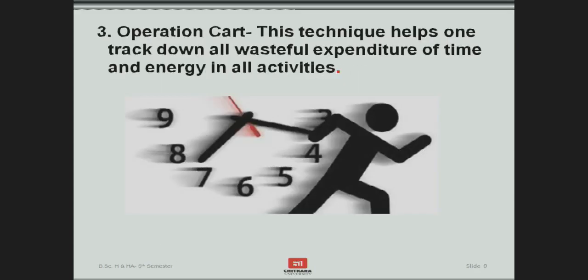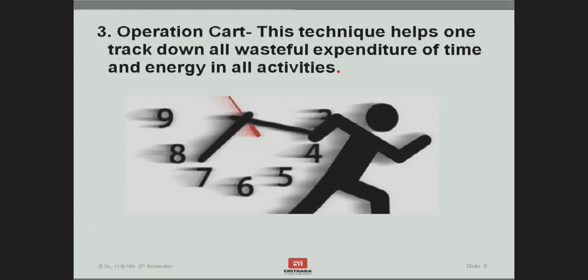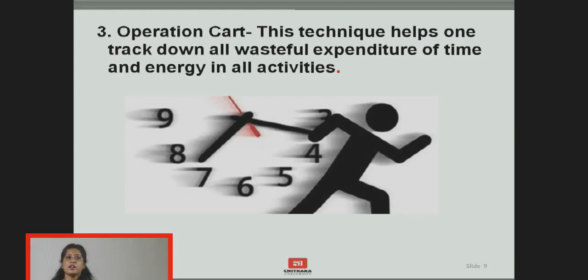The third technique is the operational chart. This technique helps to track down wasteful expenditure of time and energy in activities. It requires a detailed study of all the smaller activities making up a work process. The movements of the two hands are studied in great detail and the final analysis shows where the job is delayed. Any wasteful steps are eliminated and the necessary steps are noted down.